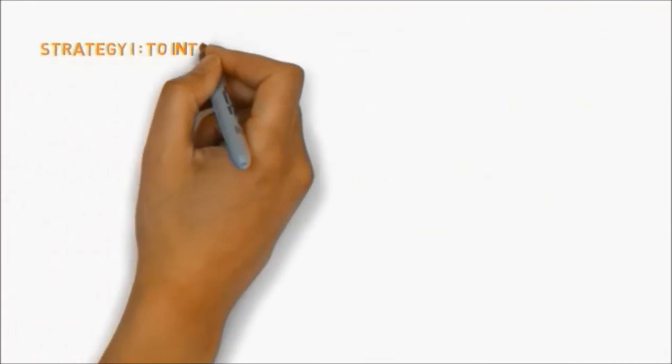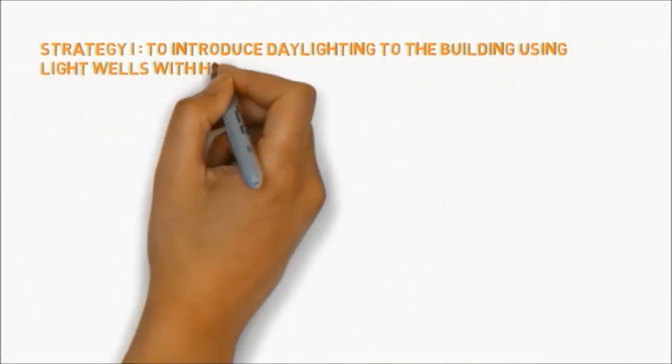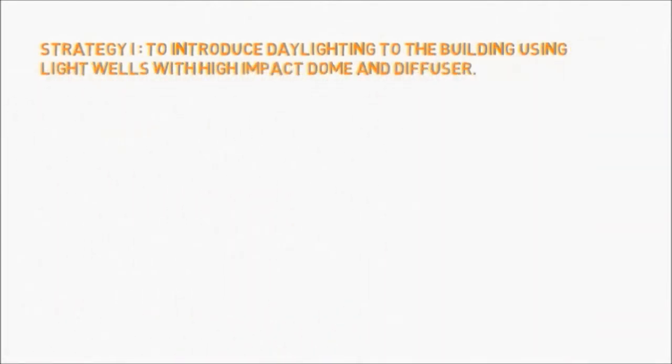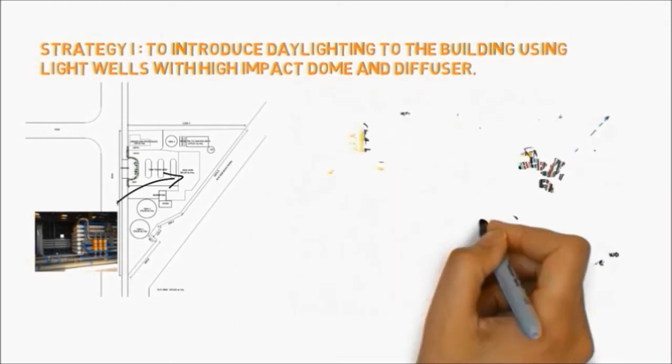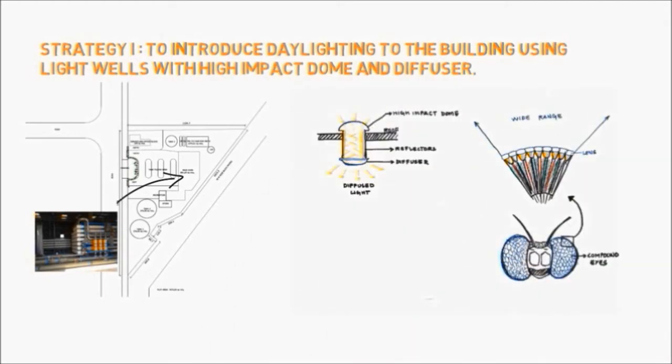Design strategy 1: to introduce daylighting to the building using light wells with high impact dome and diffuser. Poor lighting levels were observed at the main shed and the plant had artificial lights. Light wells would help in providing diffuse light to the area. This was inspired by compound eyes of the beetle.